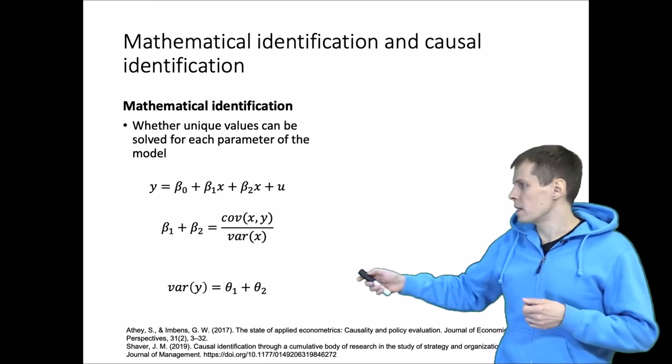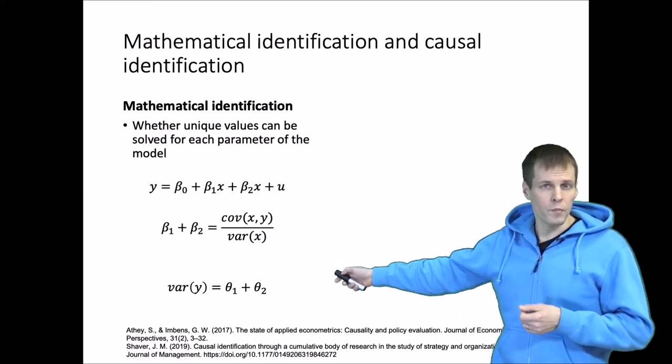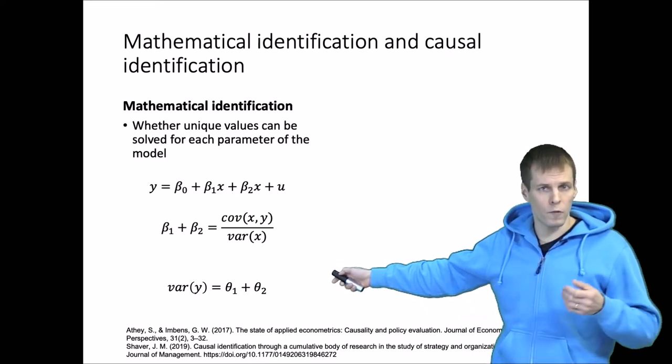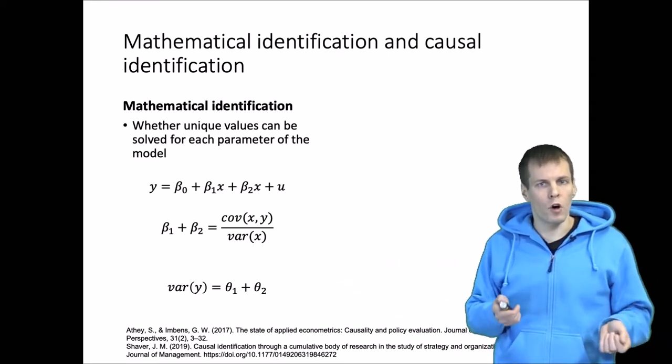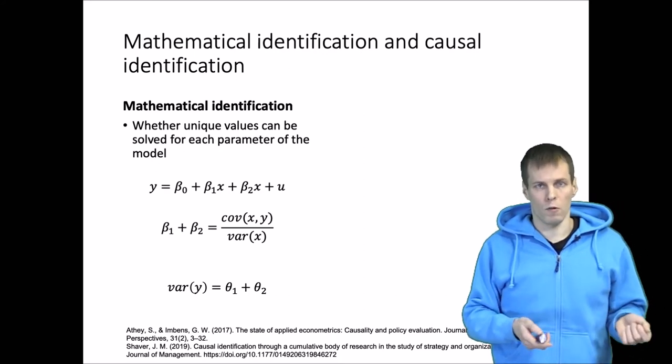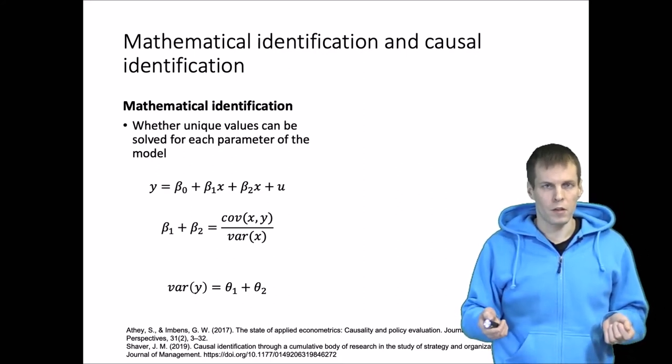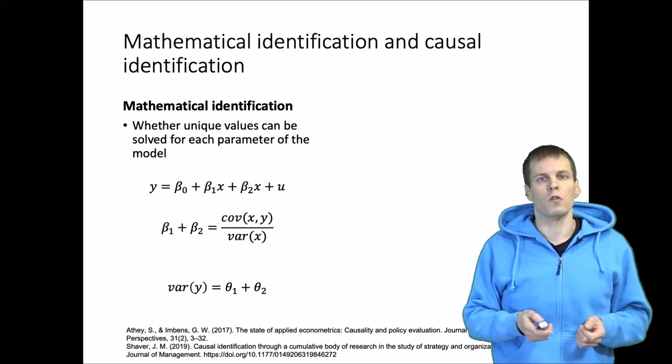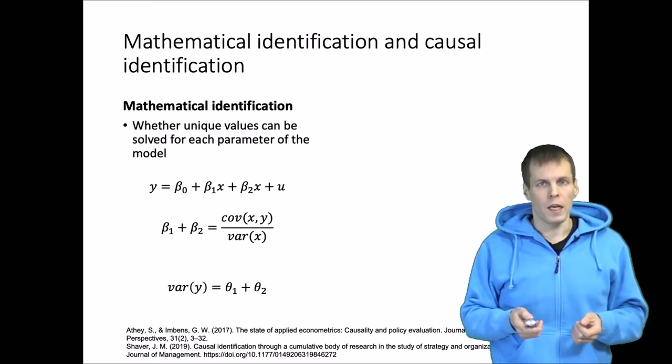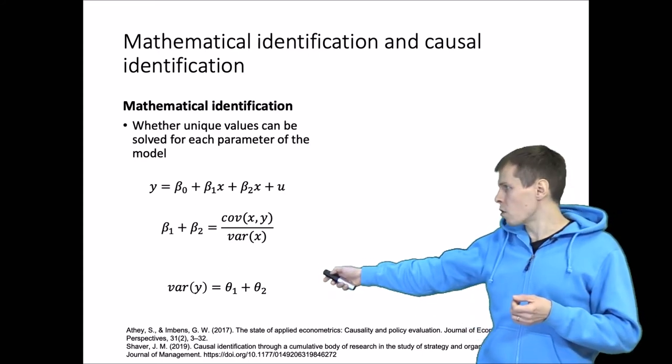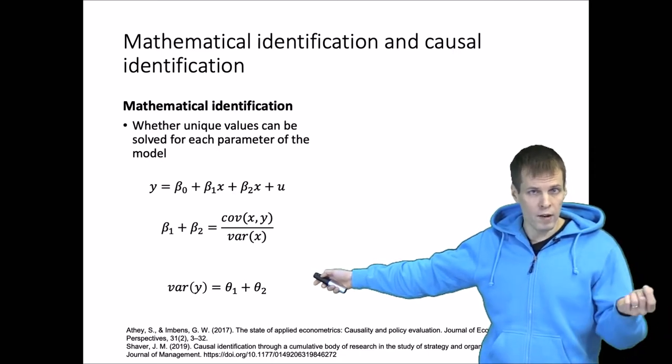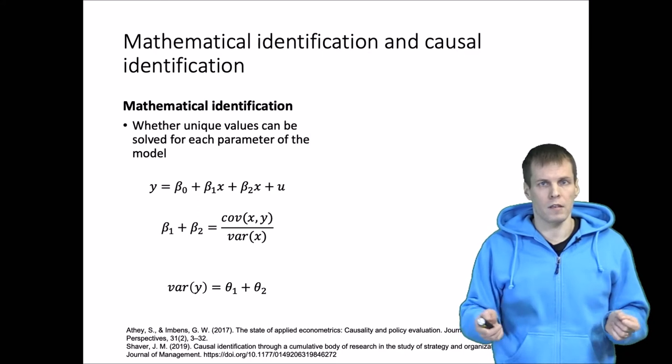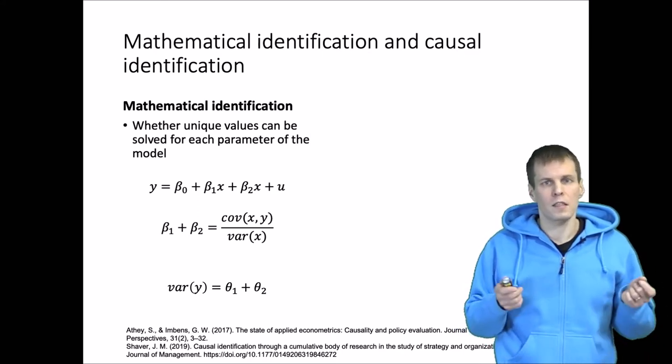Another example is if the variance of y is a product of two sources of variance, theta 1 and theta 2 that we don't observe. We cannot know which one is actually the source of variation because they are unobserved. We observe one variance and try to estimate two variances based on one variance. That simply cannot be done.